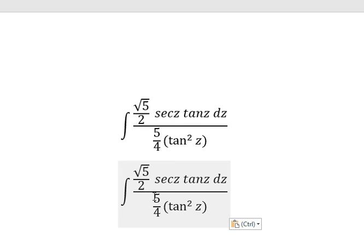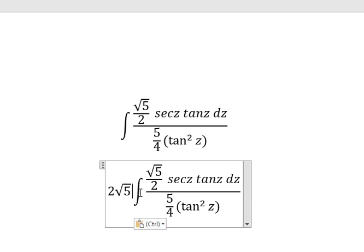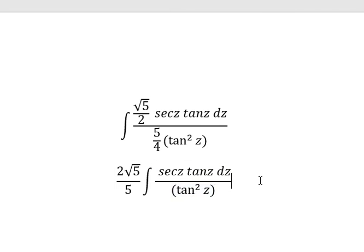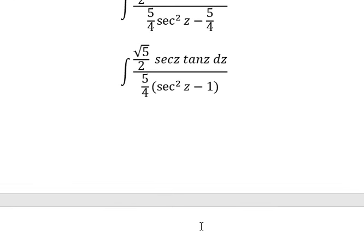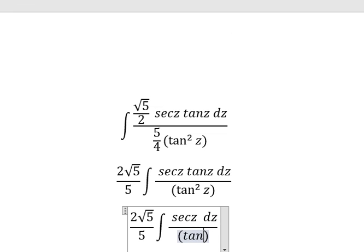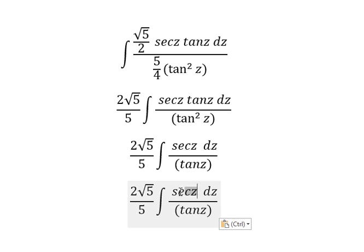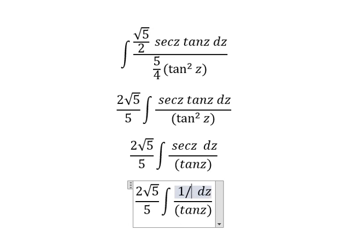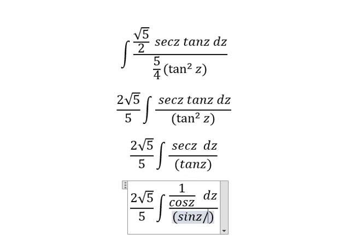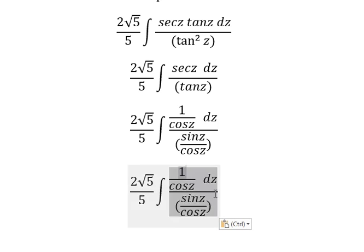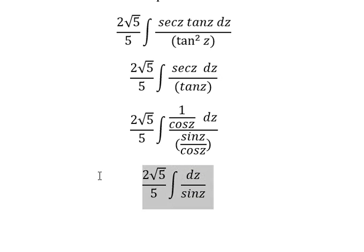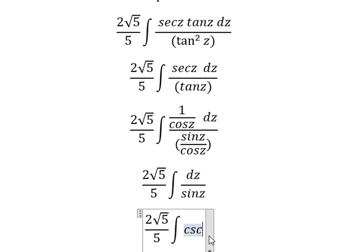Now we need to simplify the fractions. That gives 2 multiplied by the square root of 5 over 5. We simplify tan(z) with tan(z), and sec(z) is 1 over cos(z), sin(z) over cos(z) — we simplify cos(z) — and we get dz over sin(z), which we call cosecant(z) dz.